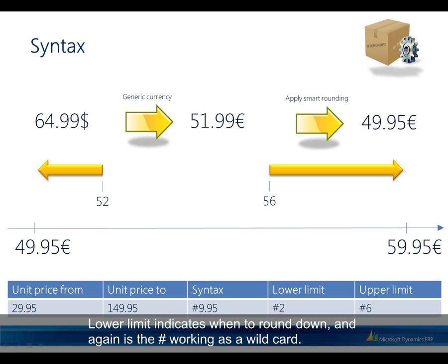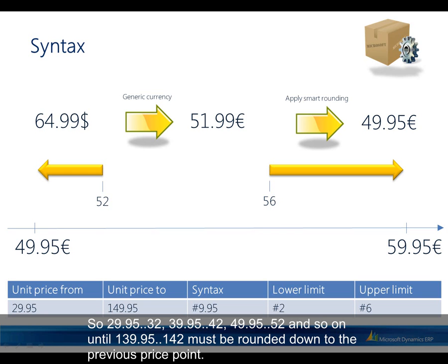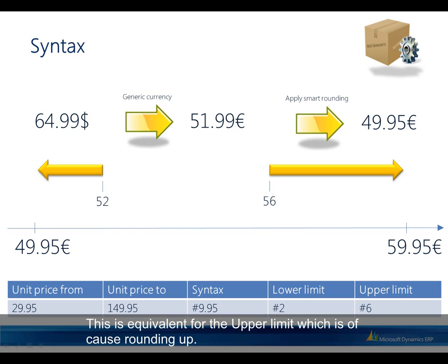The upper limit defines rounding up — values from 29.95 to 32, 39.95 to 42, 49.95 to 52, and so on up to 139.95 to 142 must be rounded up to the next price point. Unit Price From is inclusive and Unit Price To is exclusive. Let's navigate back to the product demonstration to see the environment for maintaining smart rounding rules.